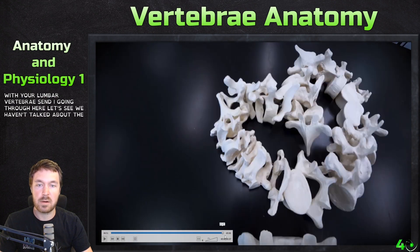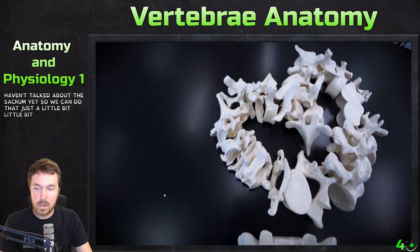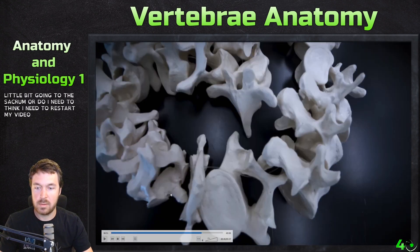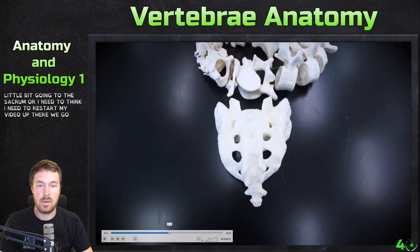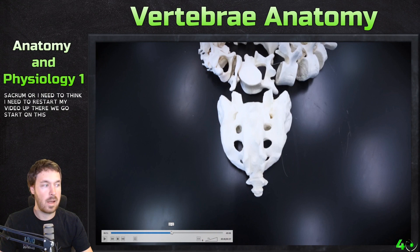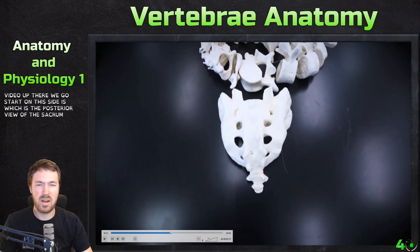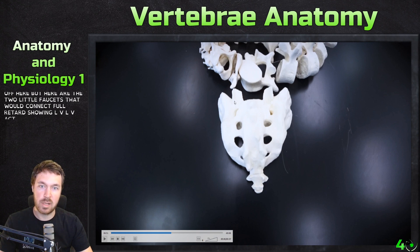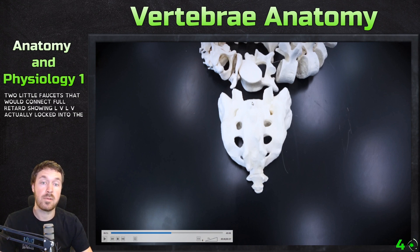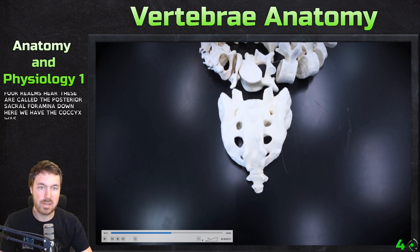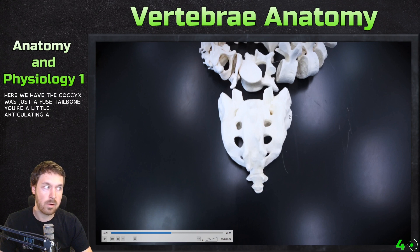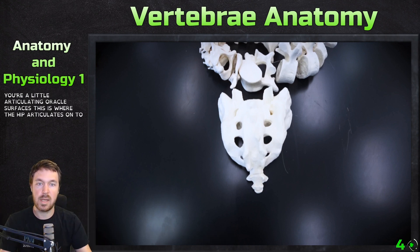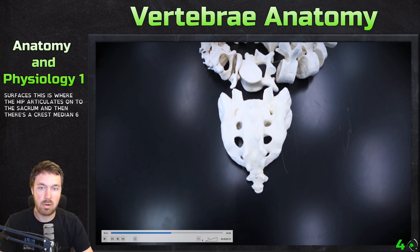We haven't talked about the sacrum yet. Starting on this side — which is the posterior view of the sacrum — here are the two little facets that would connect, showing where L5 locks into the superior side of the sacrum. And there are these foramina here — these are called the posterior sacral foramina. Down here we have the coccyx, which is the fused tailbone.